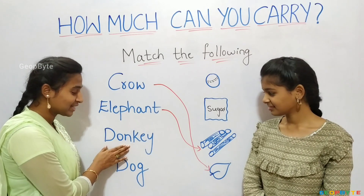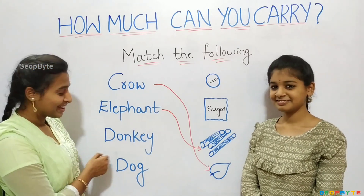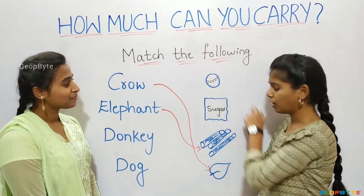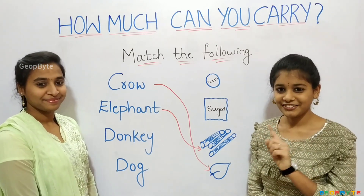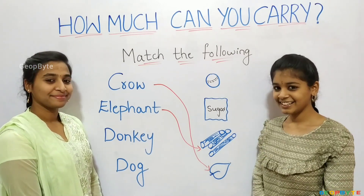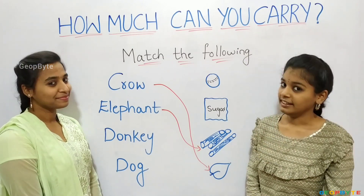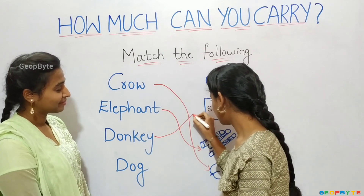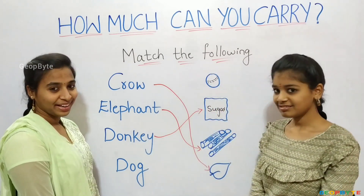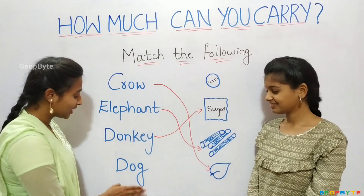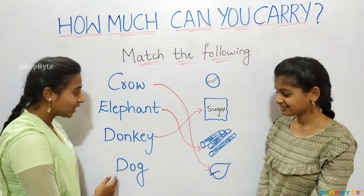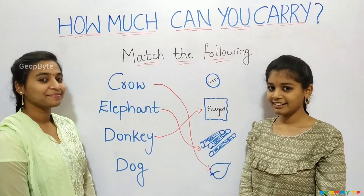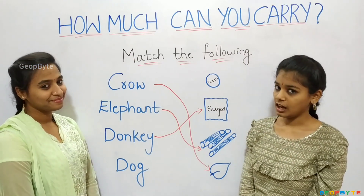Now, let us go with donkey. What does a donkey carry? Ball? No. Sugar? No. Let us match. Now, let us go with dog. What does a dog carry? Ball? Yes.